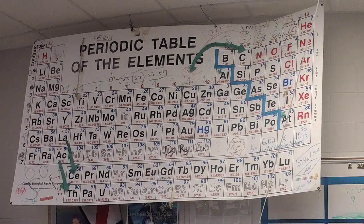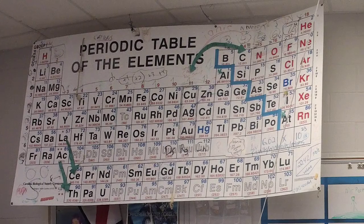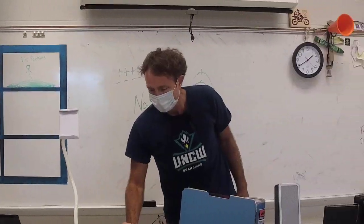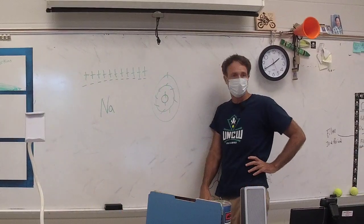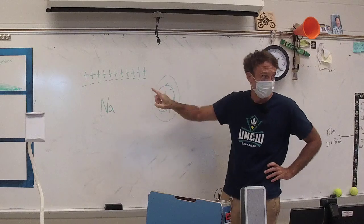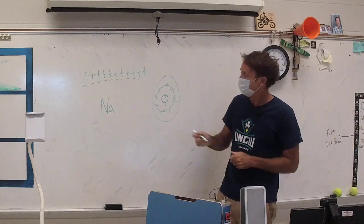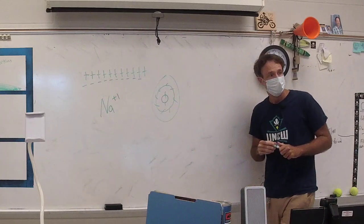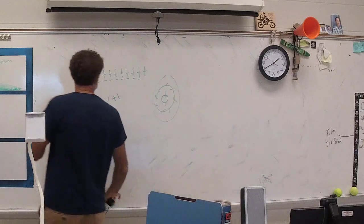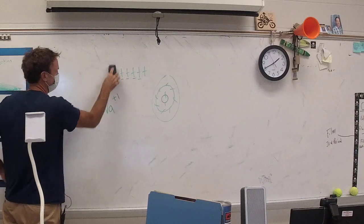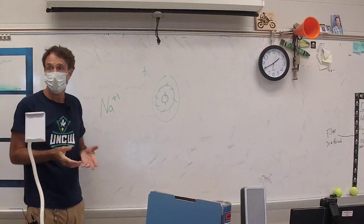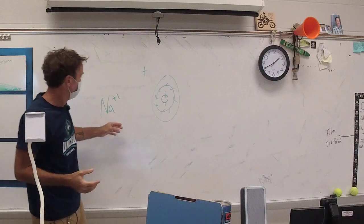If we look at sodium, it's only got one electron on the outside. Sodium loses that electron, so the one outer electron is the one that goes missing. If we take that electron away, we now have a sodium atom with a charge of positive 1. The number of protons and electrons is now out of whack — we still have 11 protons, but we only have 10 electrons. So this sodium atom would be called positive 1, or Na⁺¹.